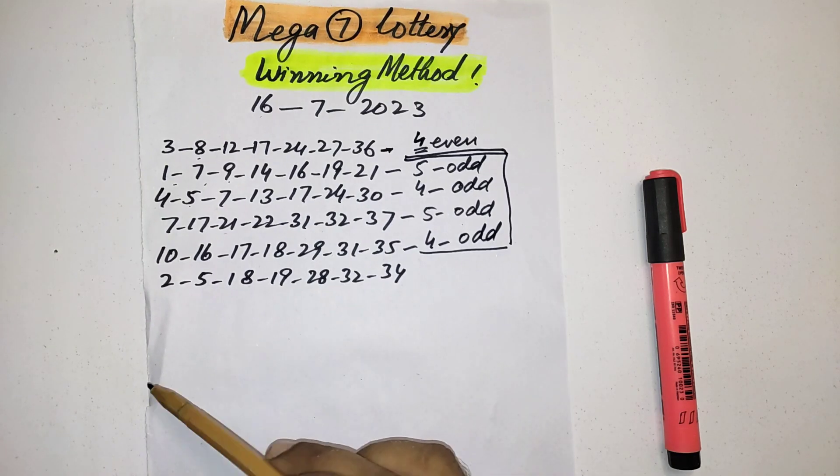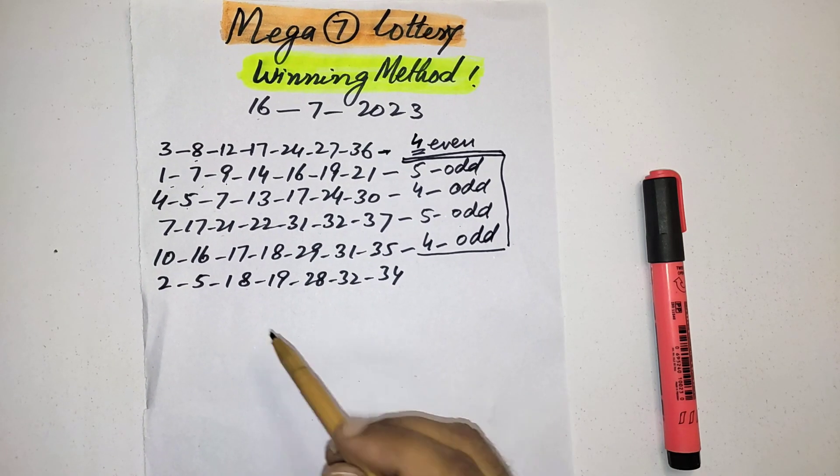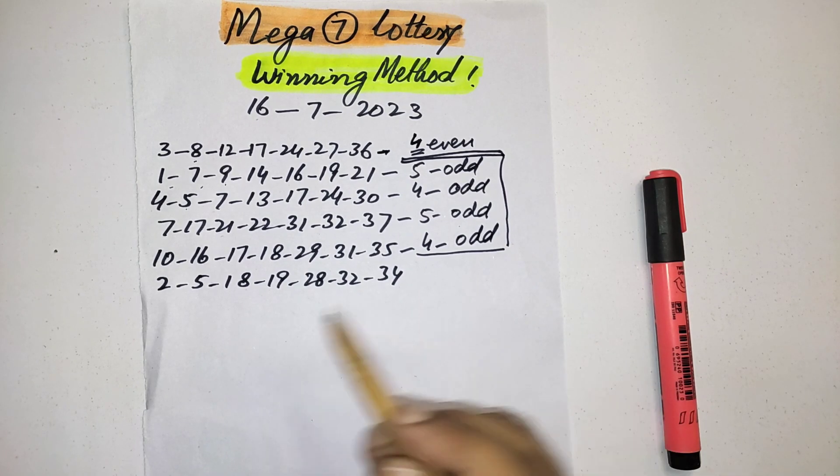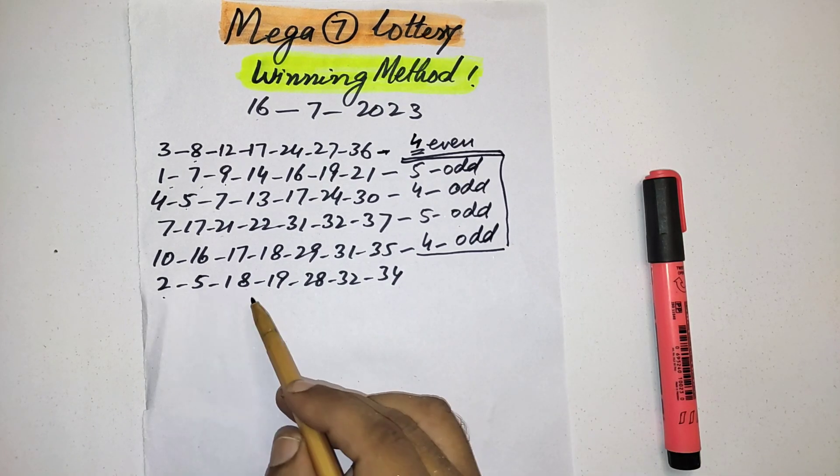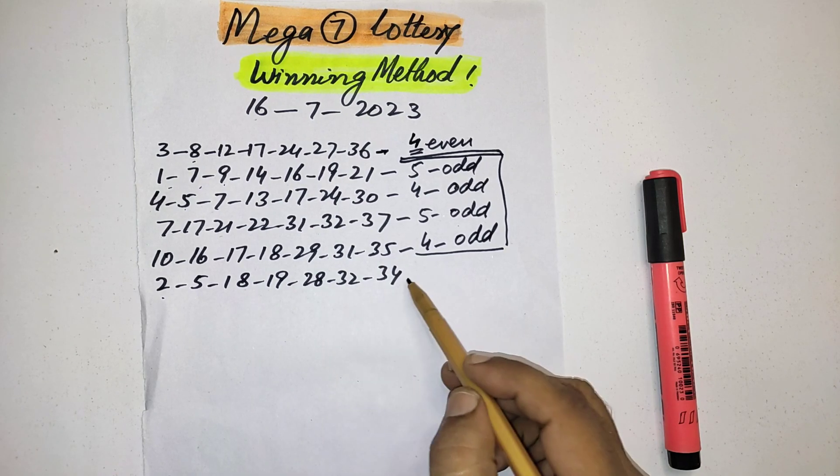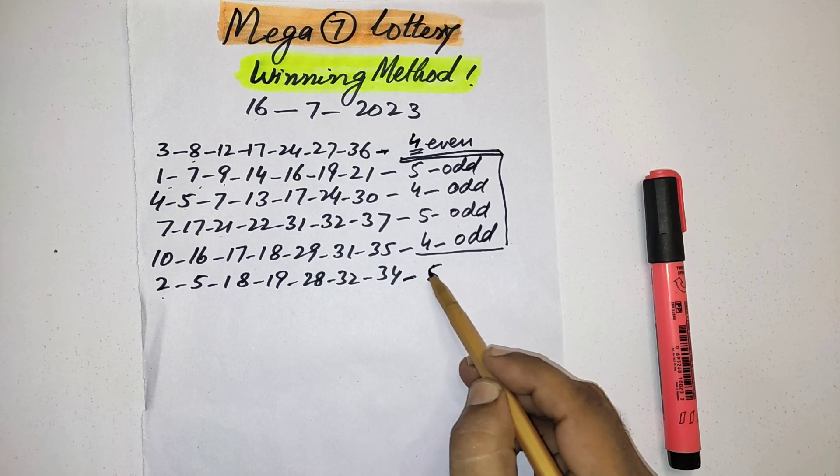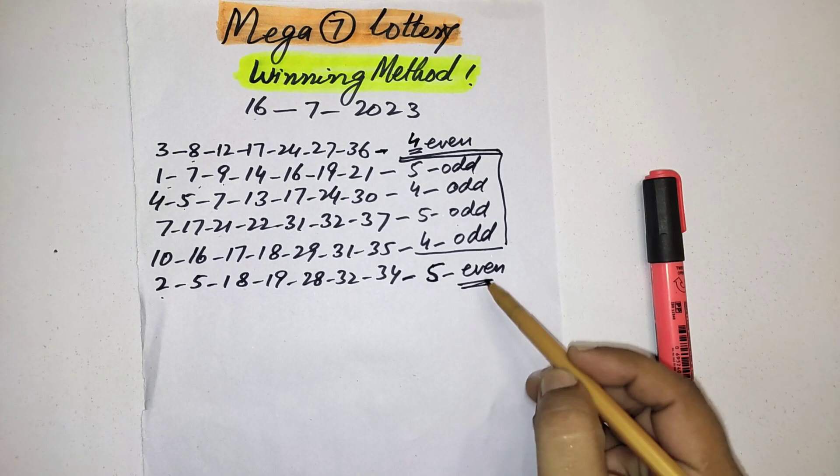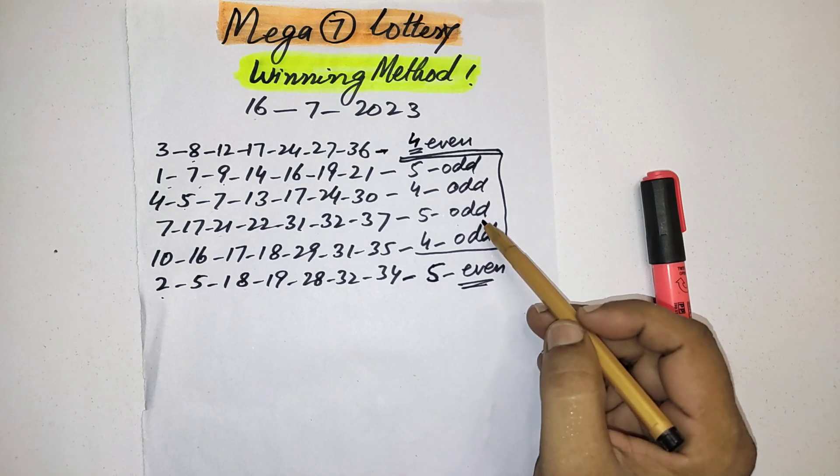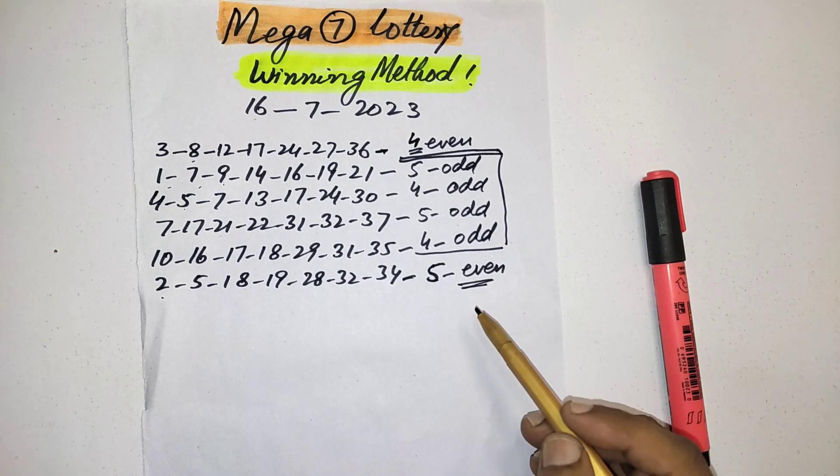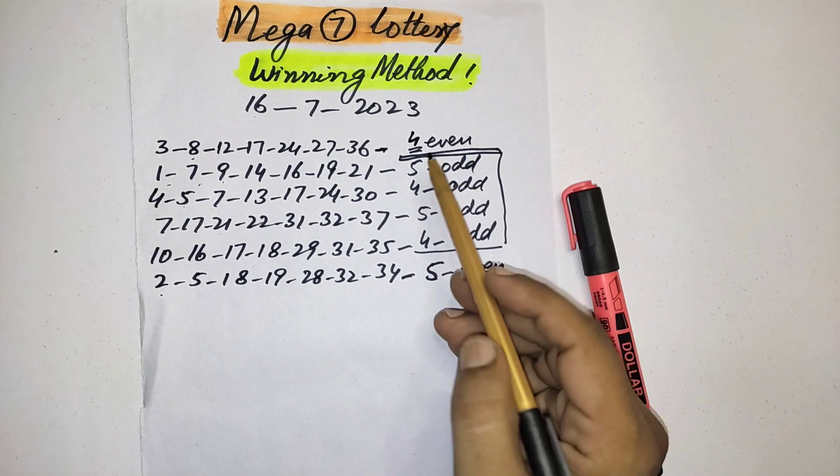This is the previous result. They changed the pattern and picked again the most numbers in even. One, two, three, four, five - five numbers again they picked in even. They changed the previous pattern. Now according to this, you should select more even numbers in the upcoming draw. Before that they picked four numbers even, and after that they picked five numbers.